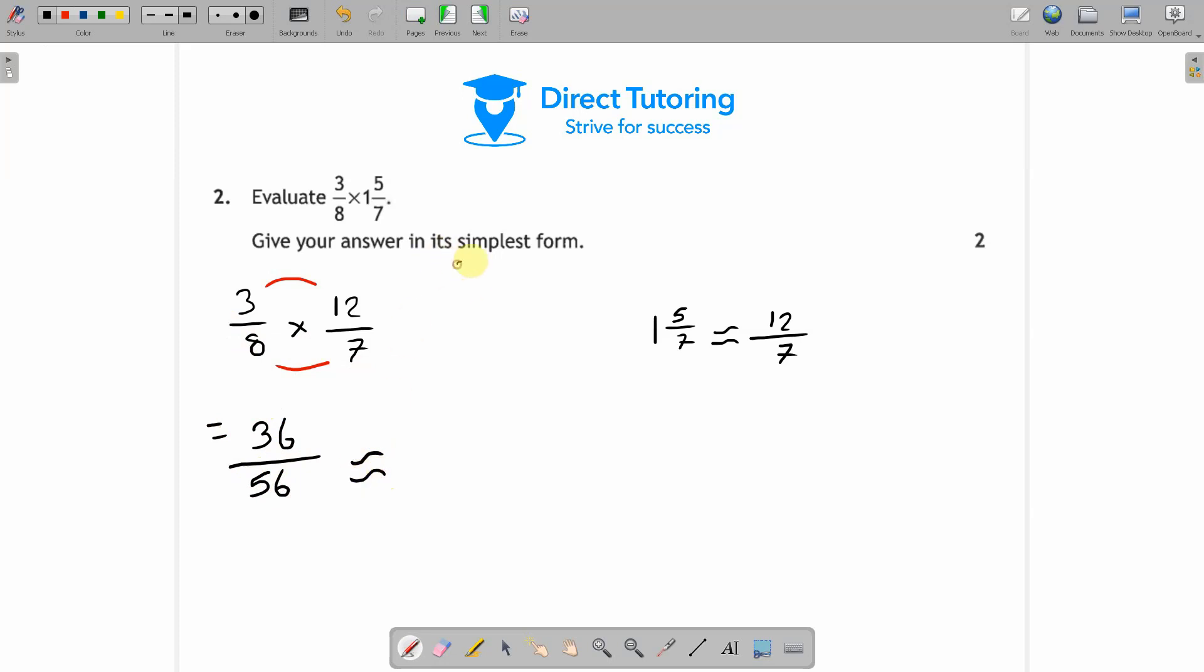Now we could leave that as our final answer. However it does ask for it in its simplest form. So what we have to do is divide these by the same number to simplify the numbers. And your final answer is going to be 9 over 14.